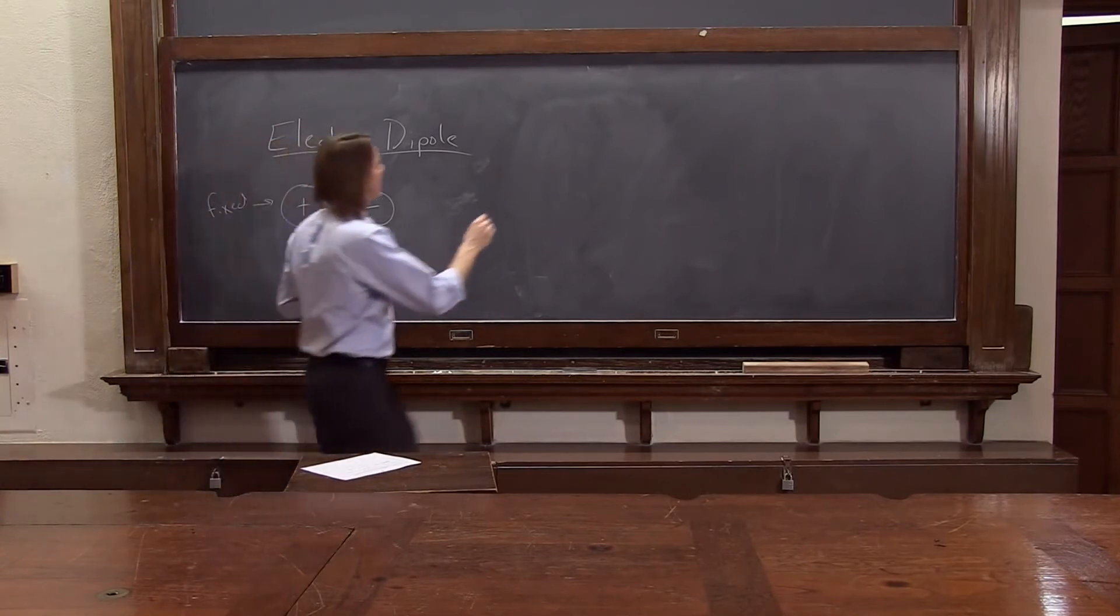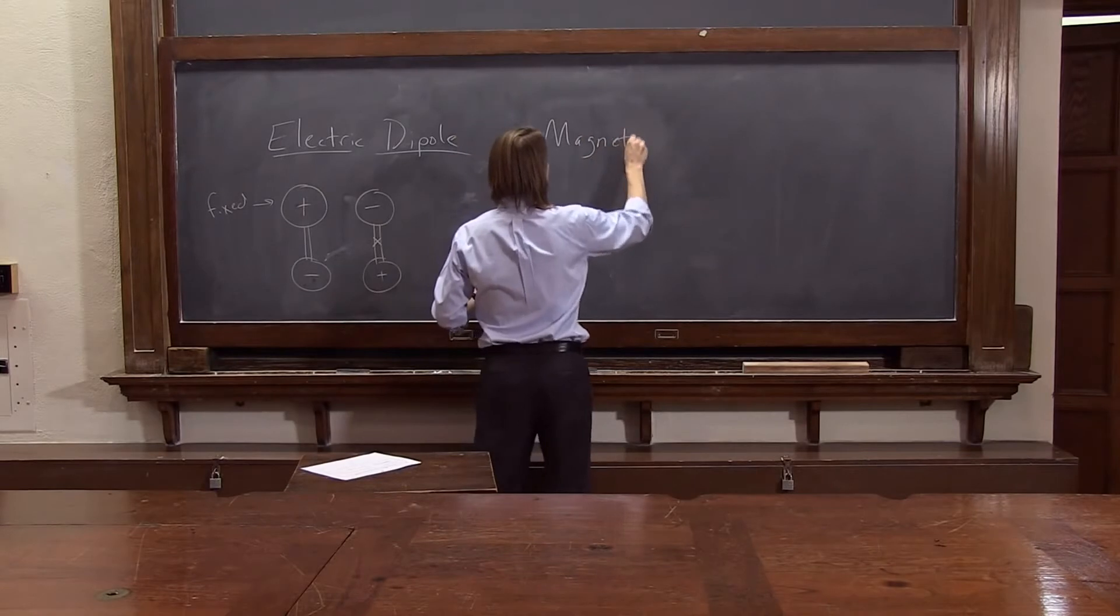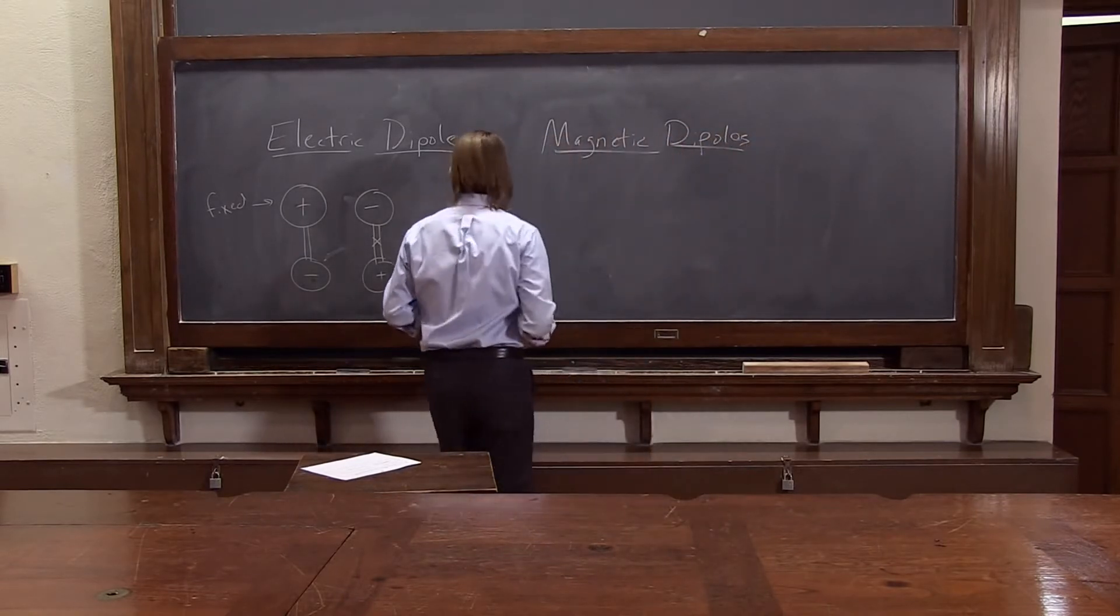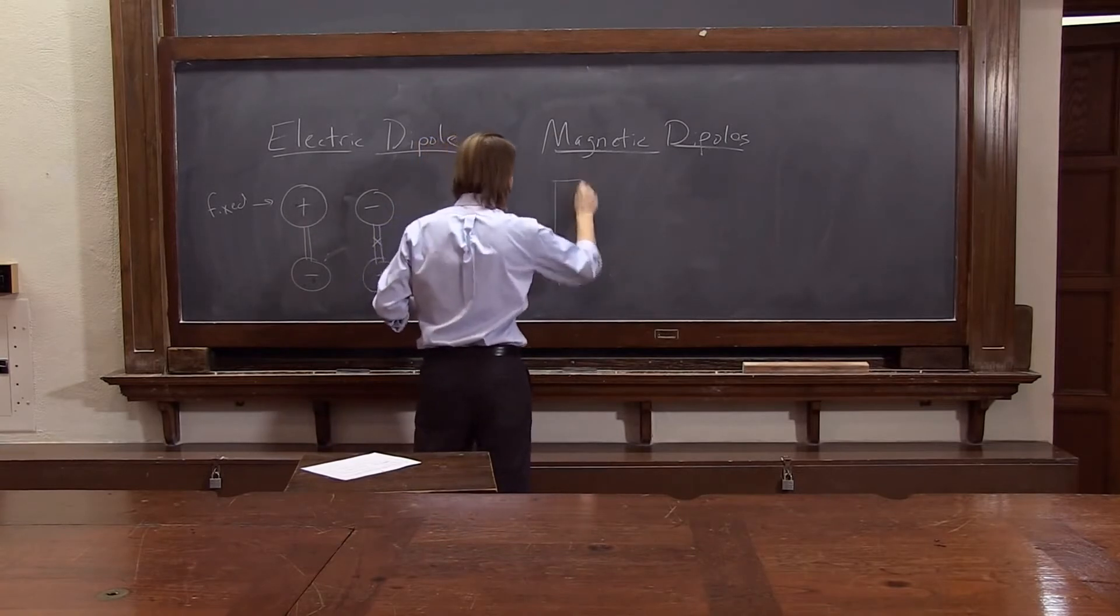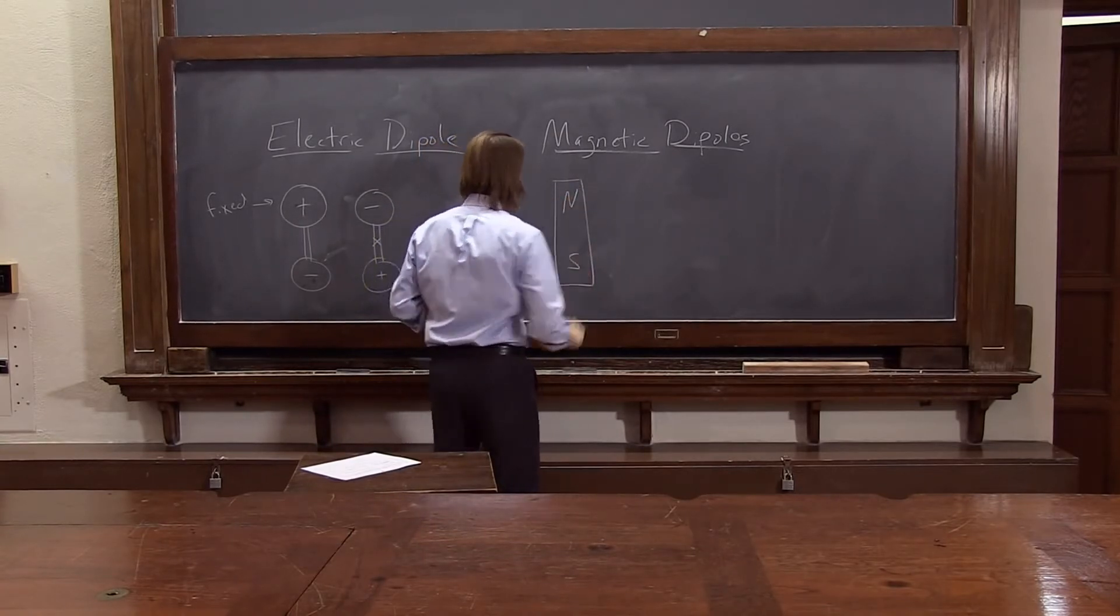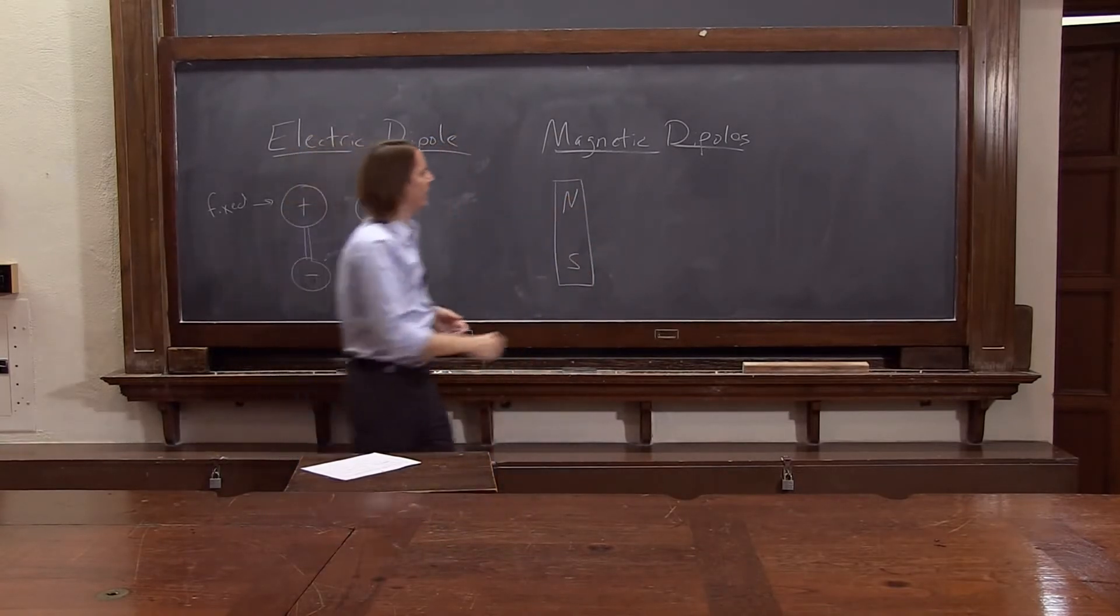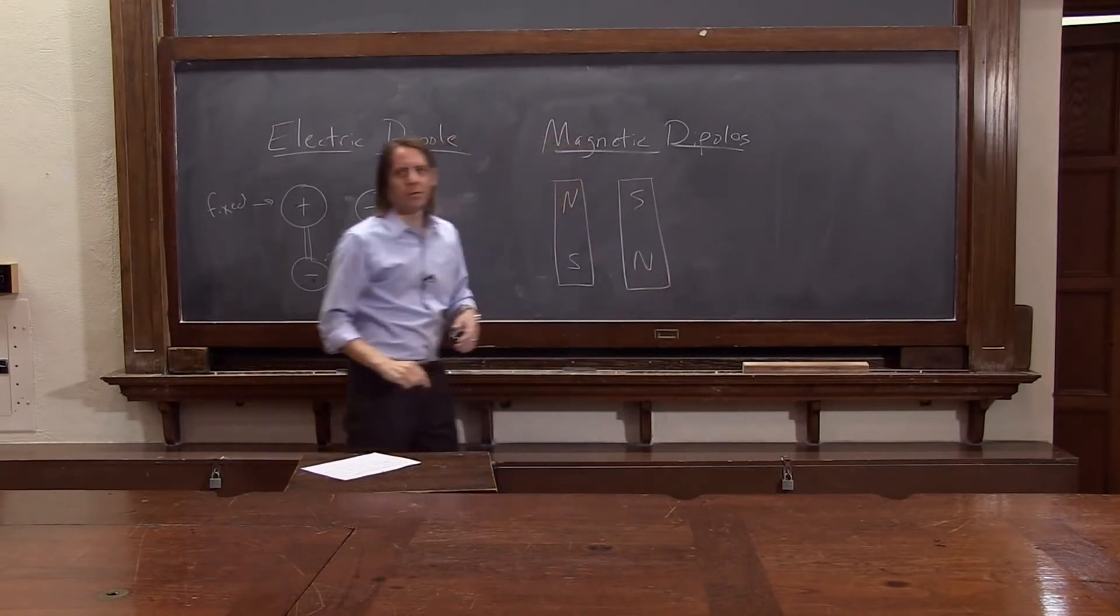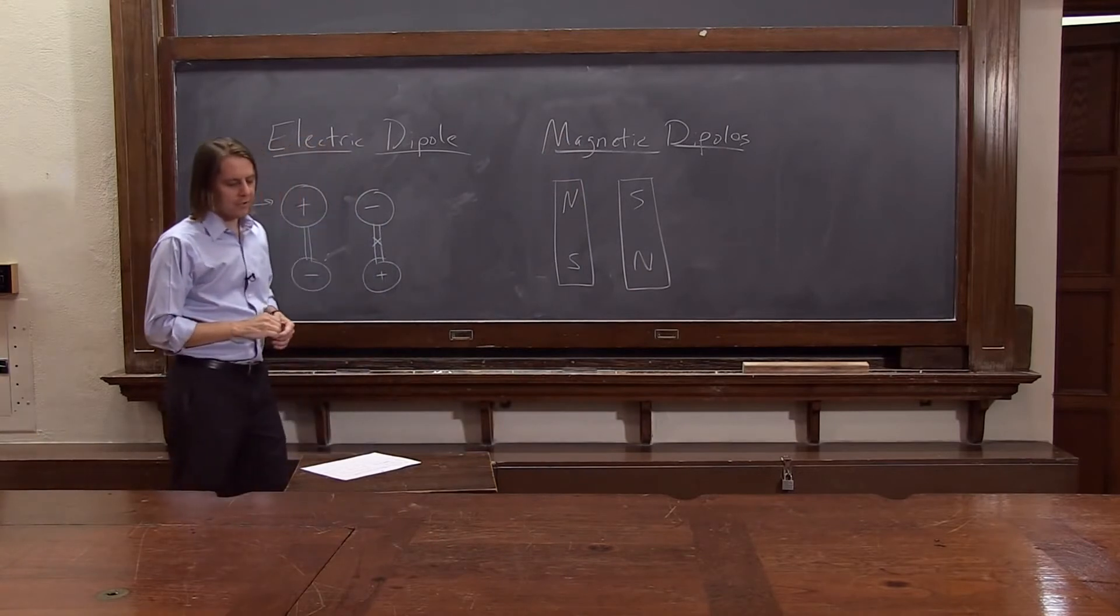So what we just saw was the same thing for magnetic dipoles. Magnetic dipoles, if we have north here and south there, we just said they like to align like this, south here and north here. So it's basically the same thing.